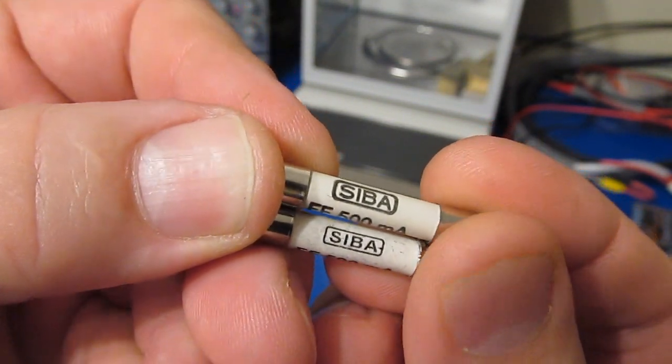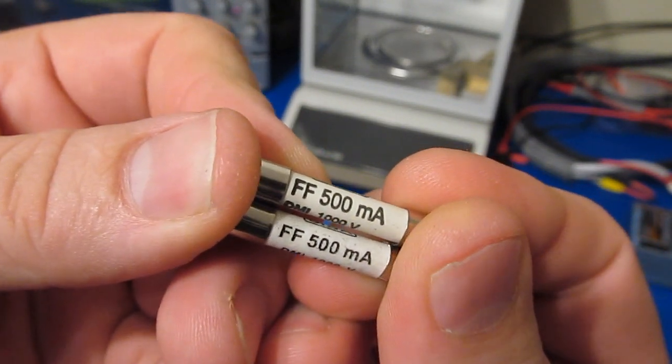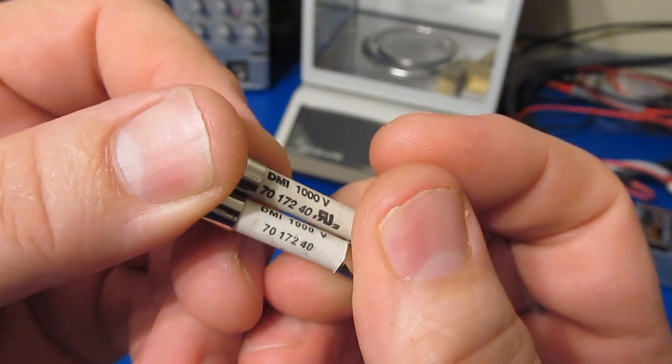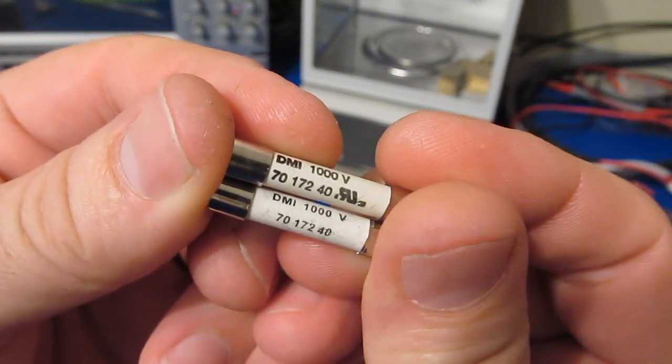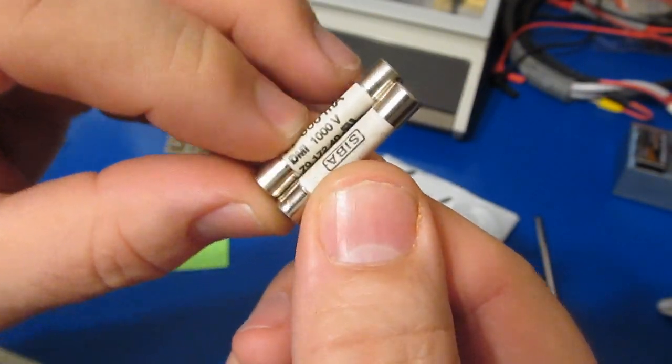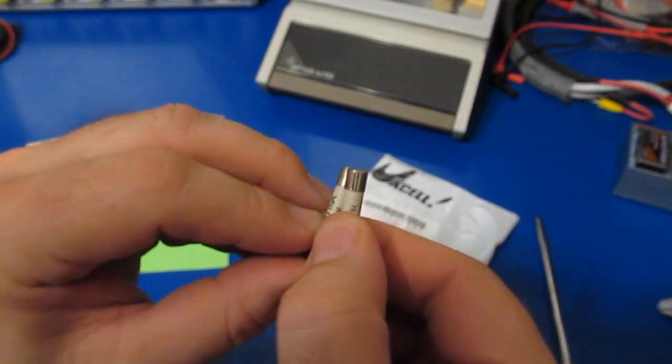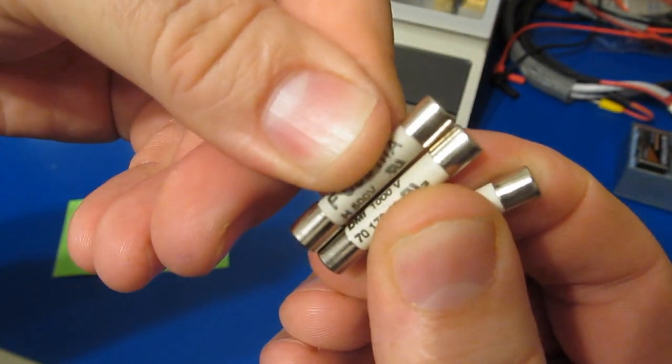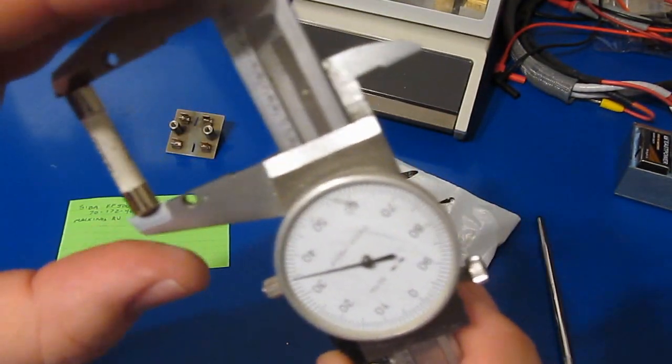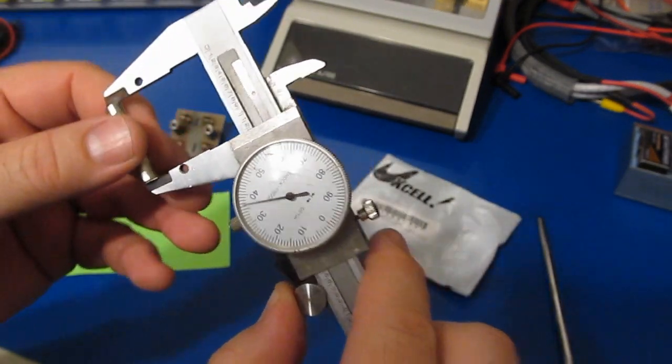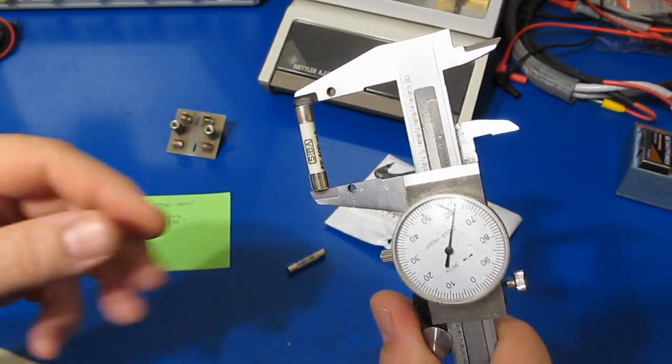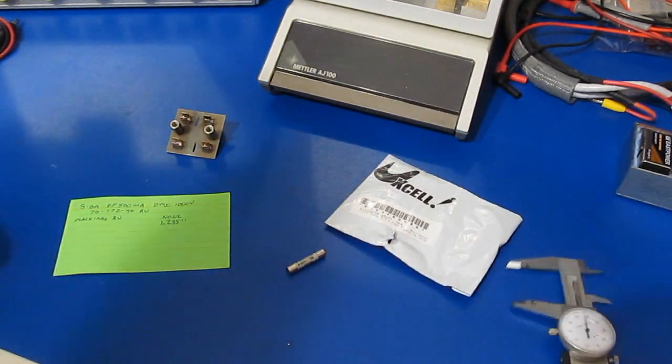Let's have a look at one of these, see the difference in the logo. So it is marked FF 500 milliamps 1000 volts, same part number. You can see it does not have the RU marking on it. The next thing I notice besides the font, there's a difference in the length of the fuse.